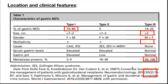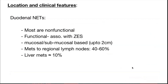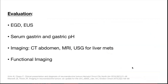Type 1 is associated with chronic atrophic gastritis and type 2 with ZES in MEN1. Duodenal neuroendocrine tumors are mostly non-functional; when functional they are associated with Zollinger-Ellison syndrome. They are mucosal or submucosal, up to 2 cm, with 40 to 60% having mets to regional lymph nodes and nearly 10% having liver metastasis. Evaluation uses esophagogastroduodenoscopy, EUS, serum gastrin, and gastric pH.